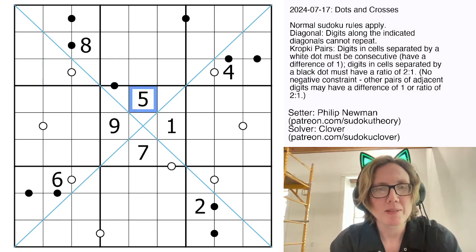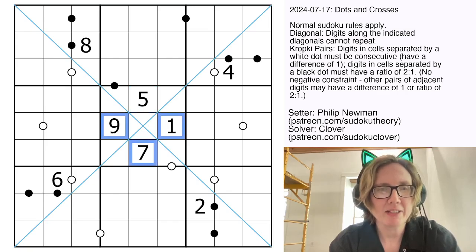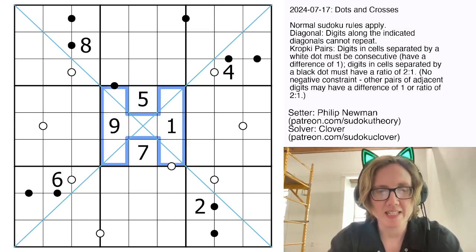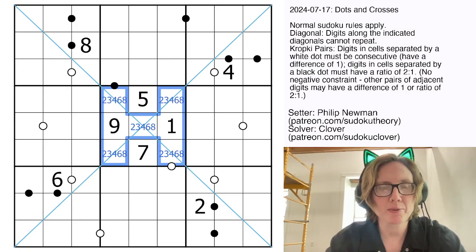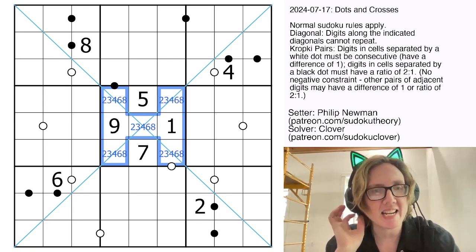So the first thing that jumps out to me in this puzzle is that I have only odd digits here, and I have a lot of them. So the remaining digits in this region are going to be 2, 3, 4, 6, and 8.